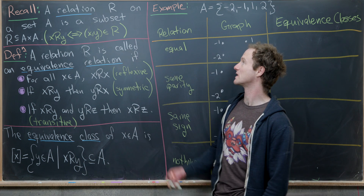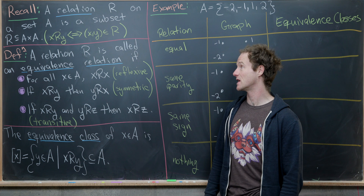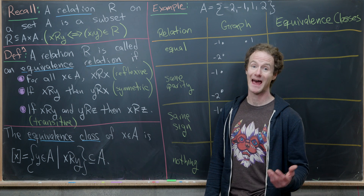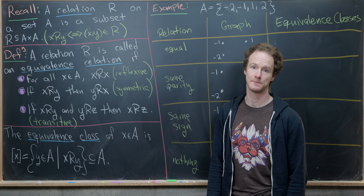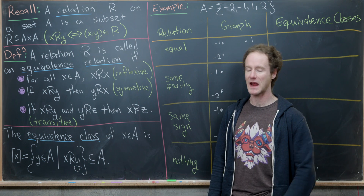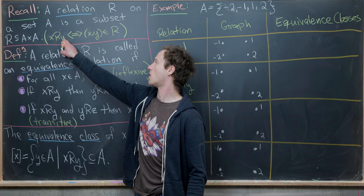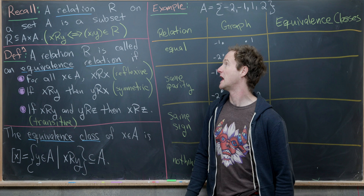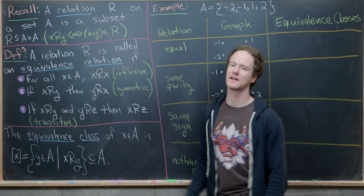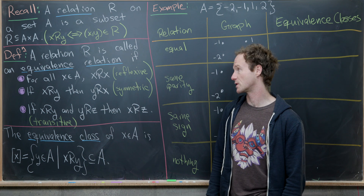Let's first recall that a relation R on a set A is really just any subset of A cross A. Any subset you can think of is considered a relation. Since we're thinking about a relation as a means to compare two elements of A, we generally write x is related to y as x R y, if and only if the pair (x, y) is in R.